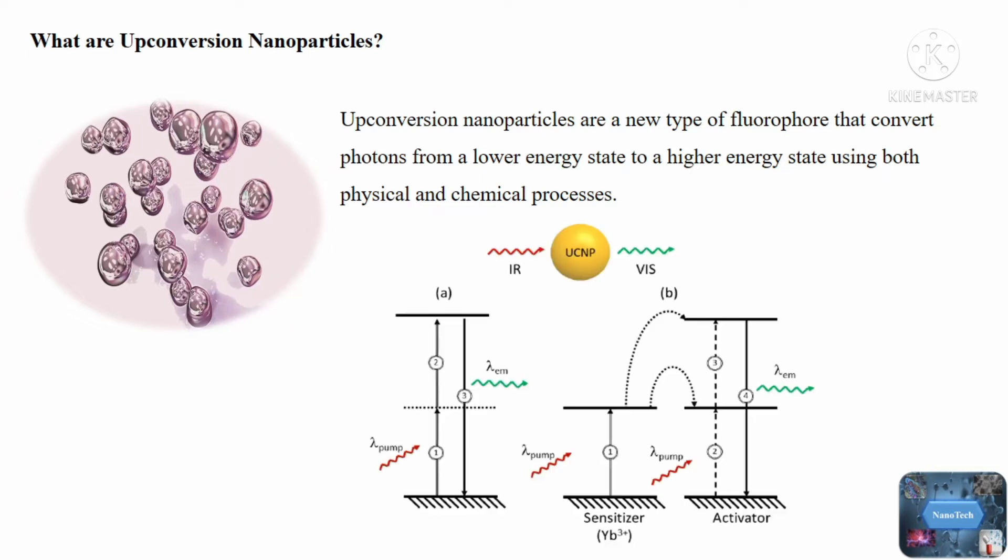While all lanthanides can undergo some form of upconversion, absorption and excitation to desired levels of the visible and UV ranges are only possible with erbium-3, holmium-3, and thulium-3, because their inner shell electrons are shielded by the 5s2 5p6 subshells, resulting in a large number of defined energy states.